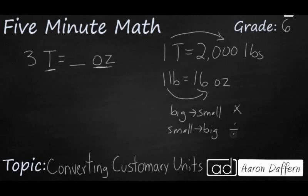Let me show you a picture to explain why that works. So we're going to take our 3 tons, so I'm going to draw three boxes here. Each of these boxes is going to represent a ton. So that's 1 ton, that's 2 tons, and that's 3 tons.